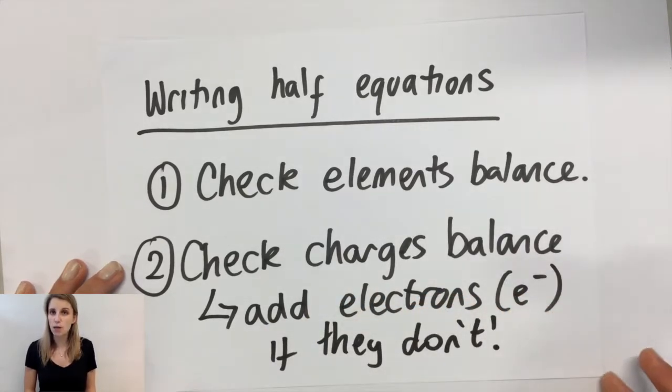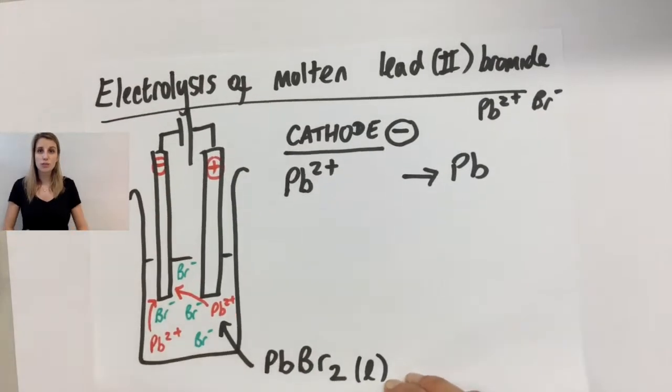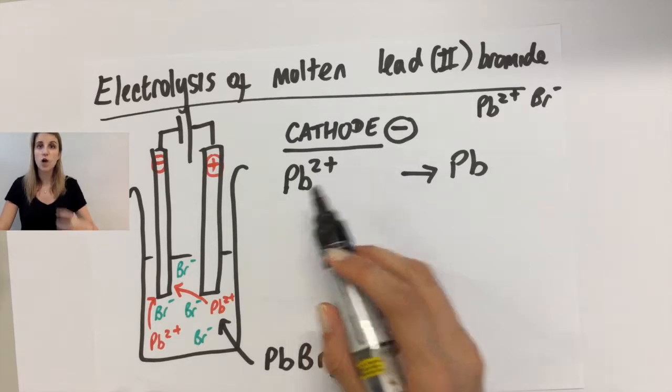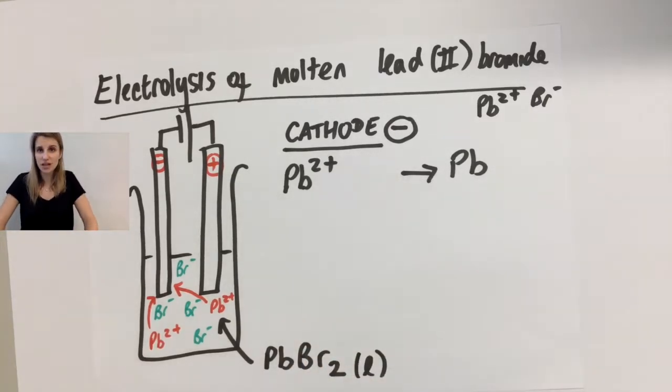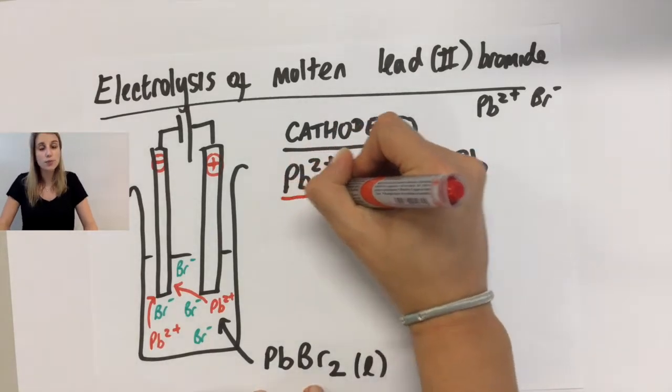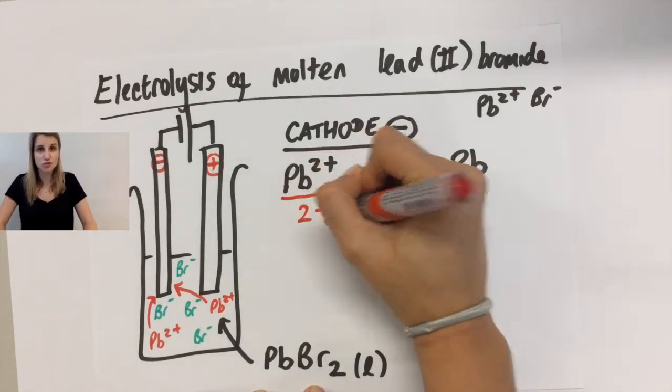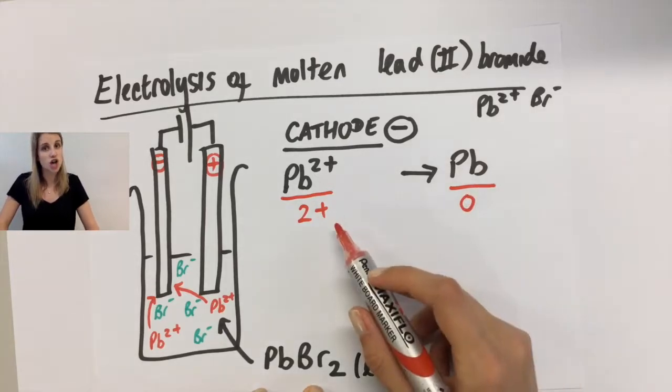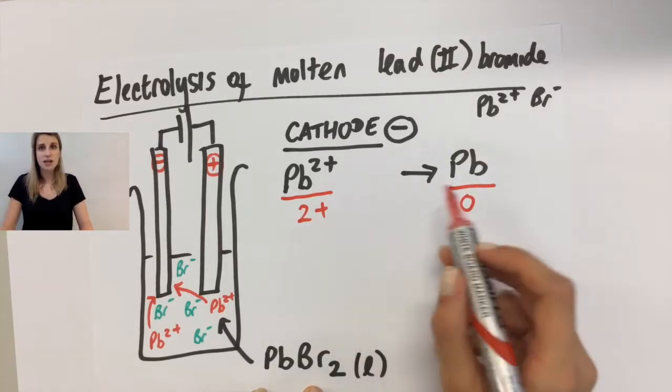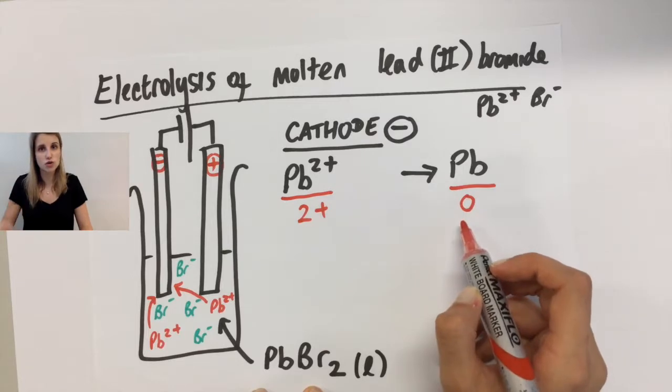Let's check out the example we were just looking at. We can have a look at the elements on both sides. But what I can see is that I've got one lead on the left and one lead on the right. So it's already balanced, it's all good. The problem is that the charges don't currently balance, because the lead on the left has got a charge of 2+ and the lead on the right currently has no charge whatsoever.